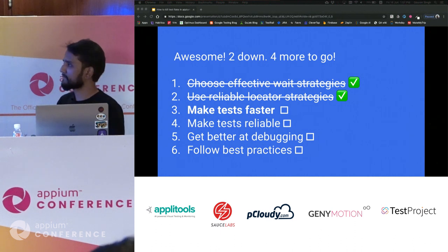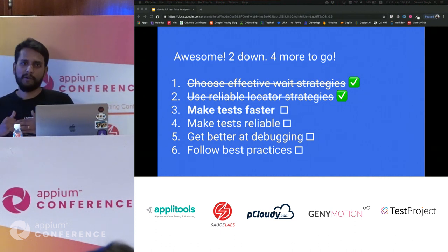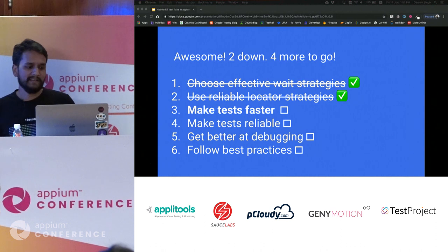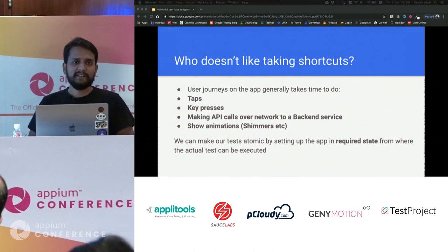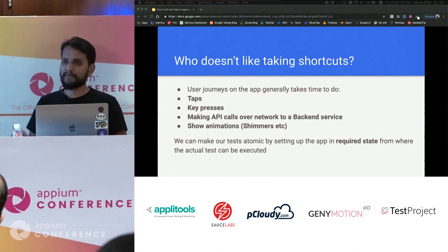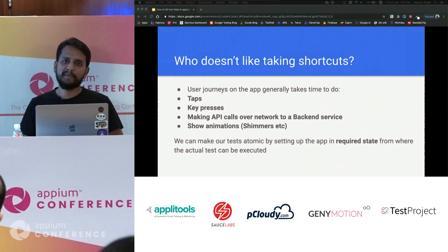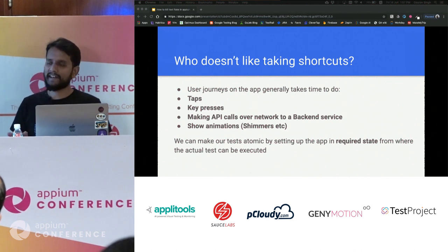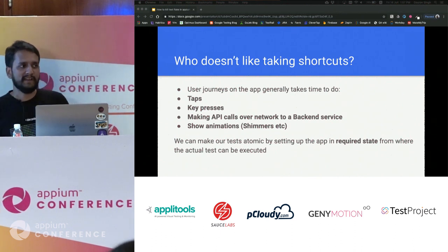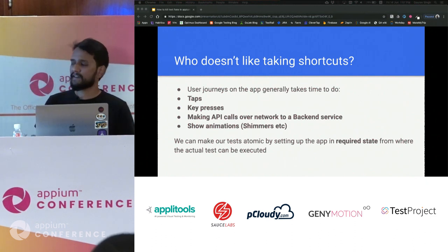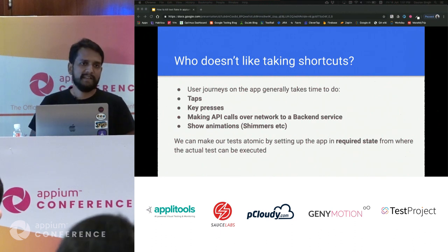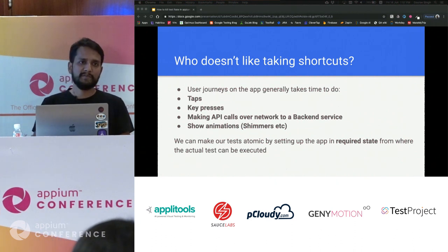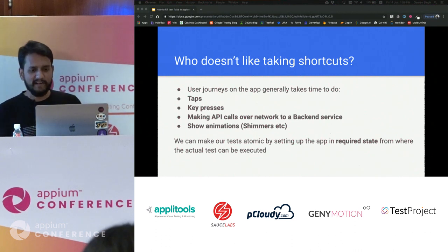If you follow those first two strategies, your tests automatically become more reliable and faster. But we can take this further. Any app is basically a sequence of events — taps, key presses, backend API calls, animations — all of which take time. What we really want in a functional test is to get straight to the meat of what we want to verify on a screen.